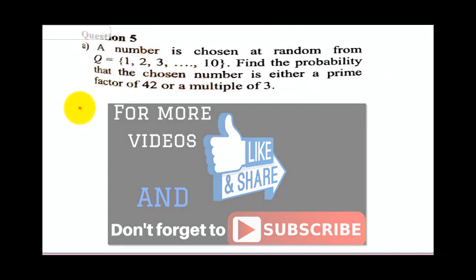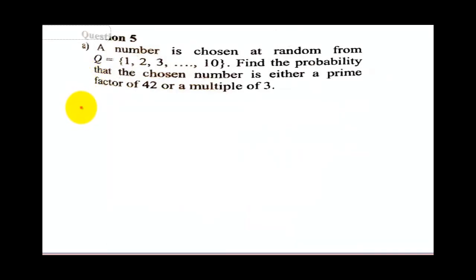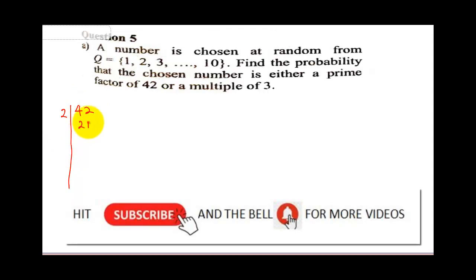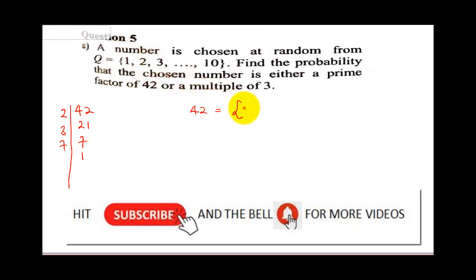To solve this question, we need to get the prime factors of 42. So we are going to divide 42 by prime numbers. 2 into 42 gives us 21. 3 into 21 is 7. 7 into 7 is 1. So 42 equals 2 times 3 times 7.